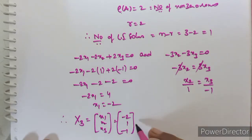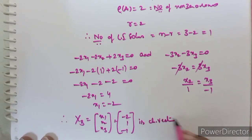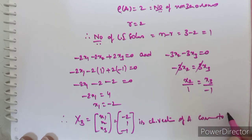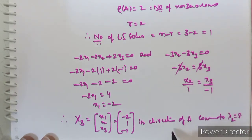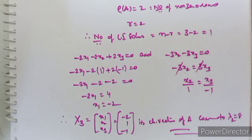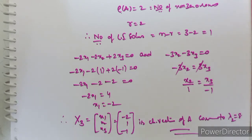This is how we find the characteristic roots and characteristic vectors of a 3×3 matrix. In the previous class we discussed eigenvalues and eigenvectors of a 2×2 matrix. In this session we learned how to find characteristic roots and characteristic vectors of a 3×3 matrix. Hope you understood — thank you.